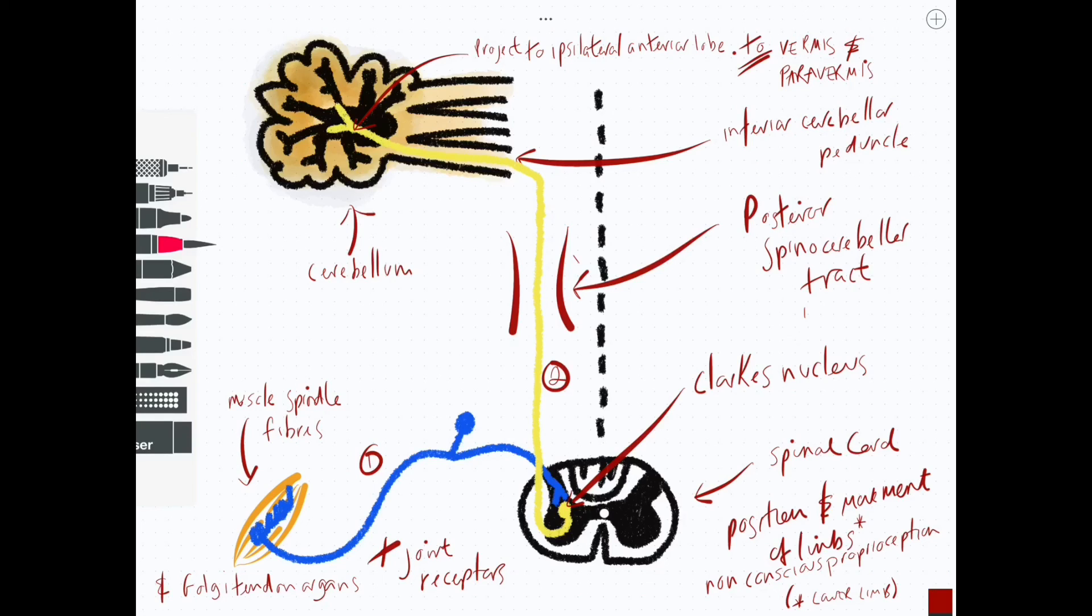It's also worth pointing out that the anterior spinocerebellar tract crosses over and ascends on the contralateral side of the spinal cord, unlike the posterior spinocerebellar tract. But eventually it crosses back over to the ipsilateral side, so it is an ipsilateral system, but it crosses over along the way.